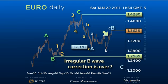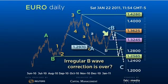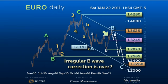Realistically, we need a loss of the 132.45 pivot point to confirm a new run at the 128.70 B wave low. An eventual downside target for this decline remains at the 122.60 weekly triangle swing target.